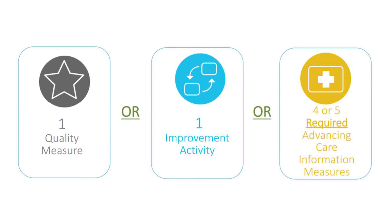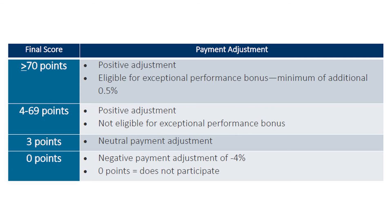This is a very simple goal to meet. Simply submitting one quality measure, one improvement activity, or your base measures under Advancing Care Information will automatically earn you 3 or more points. As you can see from this image, clinicians with a MIPS composite score of less than 3 will receive a penalty in 2019. Clinicians with a score of exactly 3 will remain neutral. Clinicians with a score ranging from 4 to 69 are eligible for a positive payment adjustment, and clinicians with a score of 70 points or higher are eligible for not only a positive adjustment, but also an exceptional performance bonus.